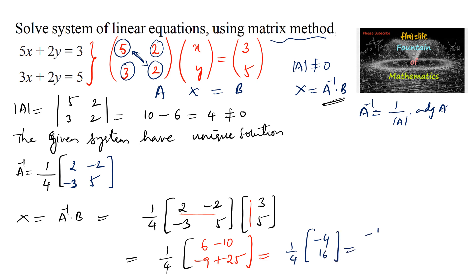So we can write negative 1 and 16 upon 4 is 4. Since the variable matrix x and y is equal to negative 1 and 4, comparing both matrices we can say x is equal to negative 1 and y is equal to 4 is the solution.